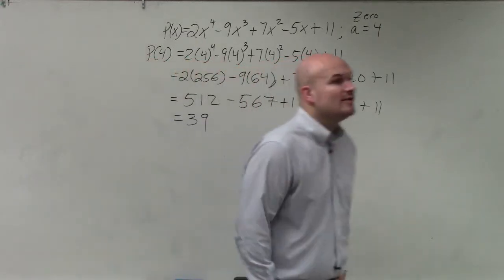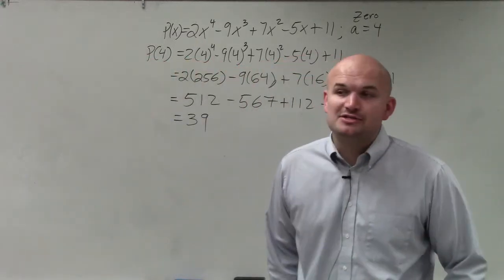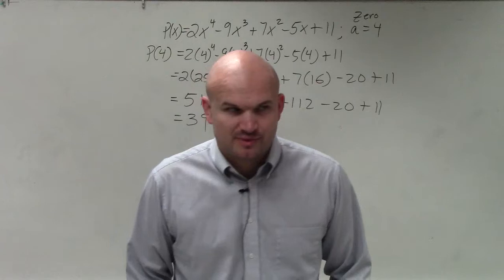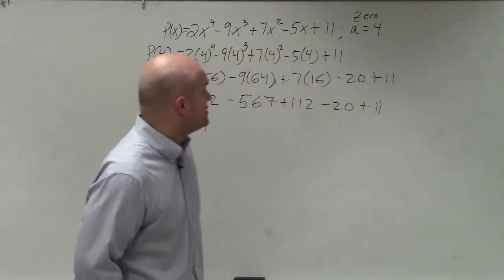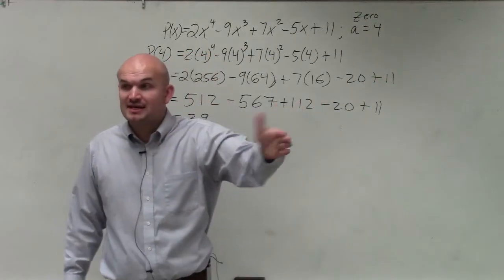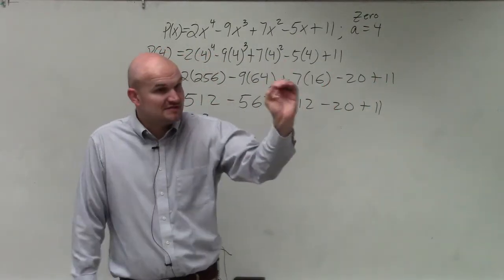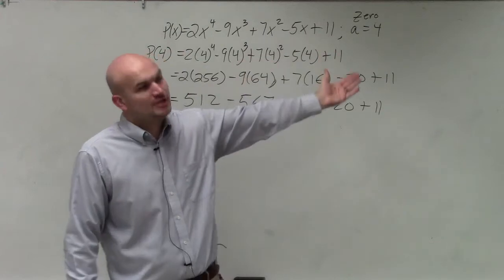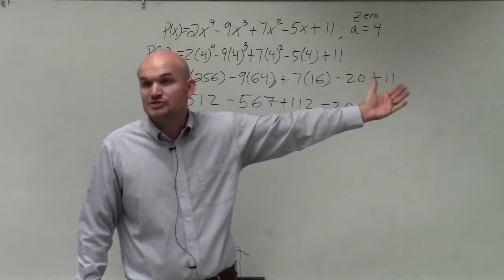OK. So that means the remainder is 39. So if the remainder is 39, and we're going to double check this, we're going to verify our answer. If the remainder is 39, then is this a zero? No, because what the factor theorem says is if you have a remainder of zero, then you have a factor, and your zero is actually a real zero solution of your polynomial.